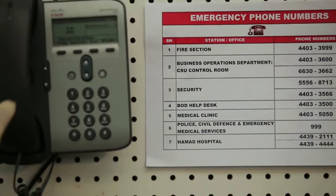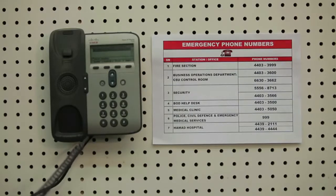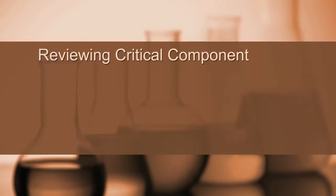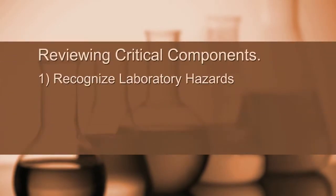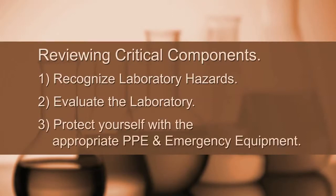Remember to report all fires regardless of size. Also be sure to report any time a fire extinguisher is discharged. In this video, we have identified critical components to fire and life safety for the laboratory. Step 1: recognise the laboratory hazards using the laboratory hazard assessment tool. Step 2: evaluate the lab including your housekeeping practices, storage requirements and fume hood use. Step 3: protect yourself through the selection and use of proper personal protective equipment. Educate yourself on the use of emergency equipment, including a fire extinguisher. Fire and life safety preparation is critical to your health and safety.